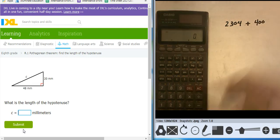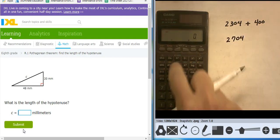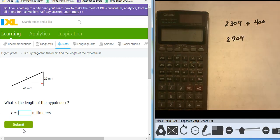Add them together. That's going to be 2704. Take the square root of that. It's 52. And that is my hypotenuse, 52.